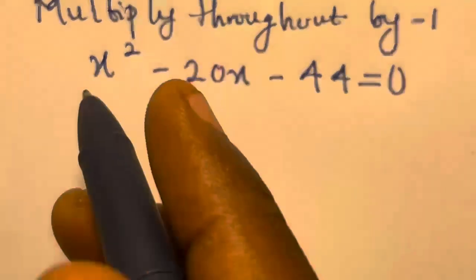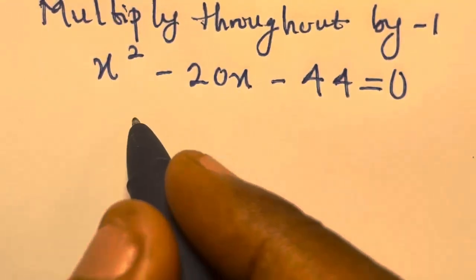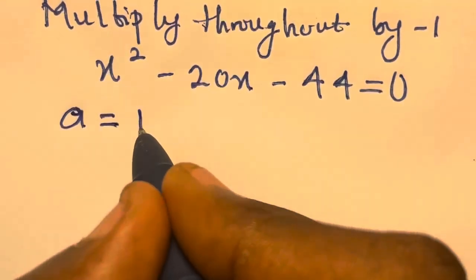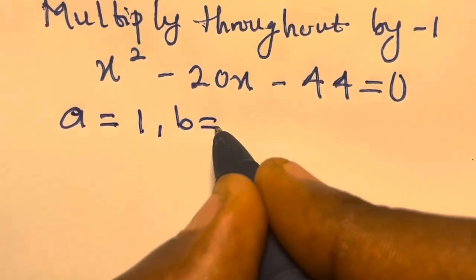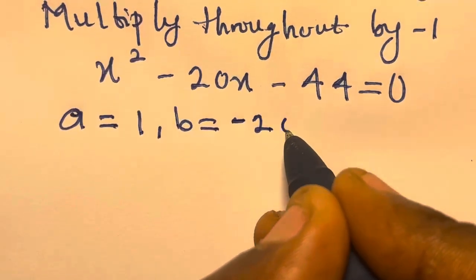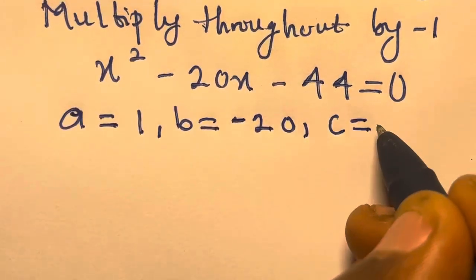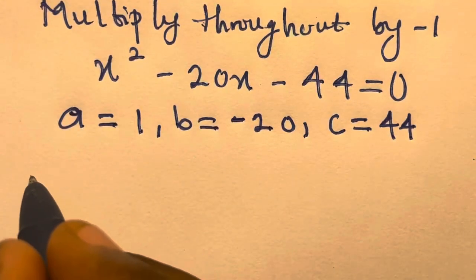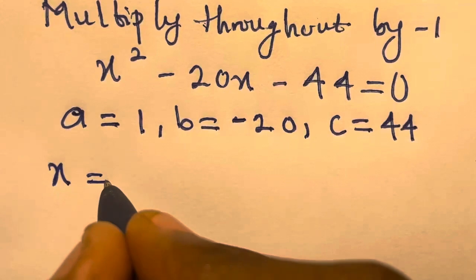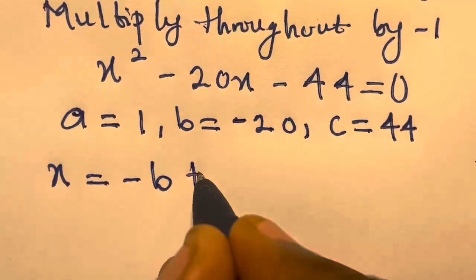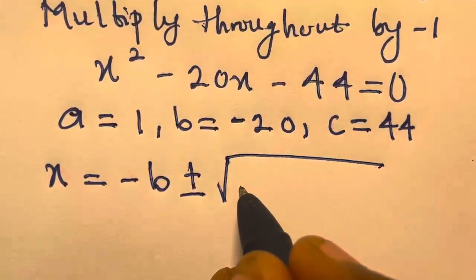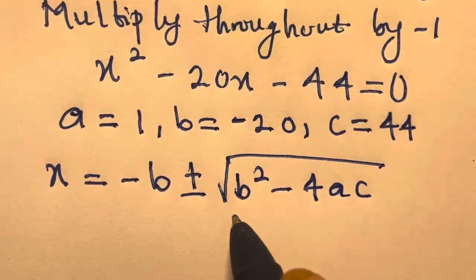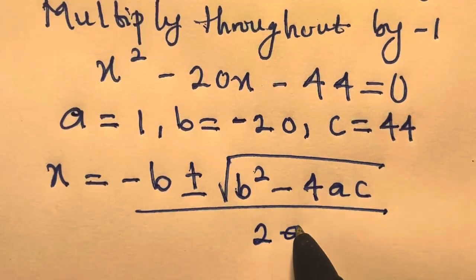From here, let's use the quadratic formula. We declare that our a, the coefficient of x squared, is 1. b, the coefficient of x, is minus 20. And our c, the constant term, is 44. The quadratic formula gives us x equals minus b plus or minus square root of b squared minus 4ac, divided by 2a.